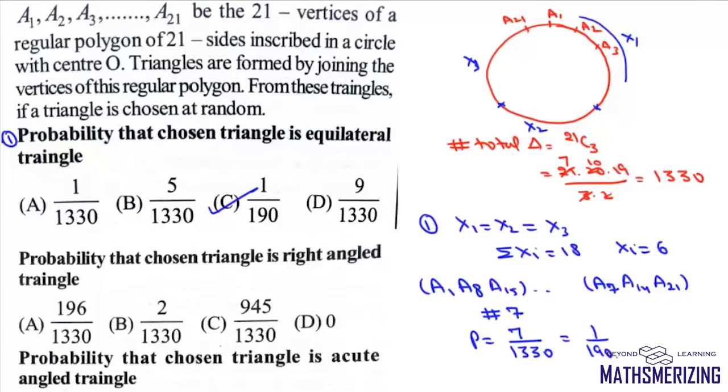Now we know that angle in a semicircle is 90 degrees. So if there is a right-angled triangle, then one of the sides must be the diameter of this circle. But since we have 21 vertices, if we choose any one vertex opposite to a1, there won't be any vertex. There will be vertices on either side of it.